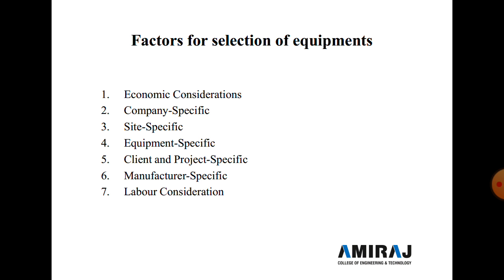The next topic is factors for selection of equipment. There are seven factors. The first is economic consideration — selecting machinery must be economical. Using heavy machinery on a small project increases overall construction cost. For a small excavation, a small excavator is sufficient, while large excavation areas require larger machines. Equipment should be selected according to time requirements without increasing overall cost beyond the targeted budget.